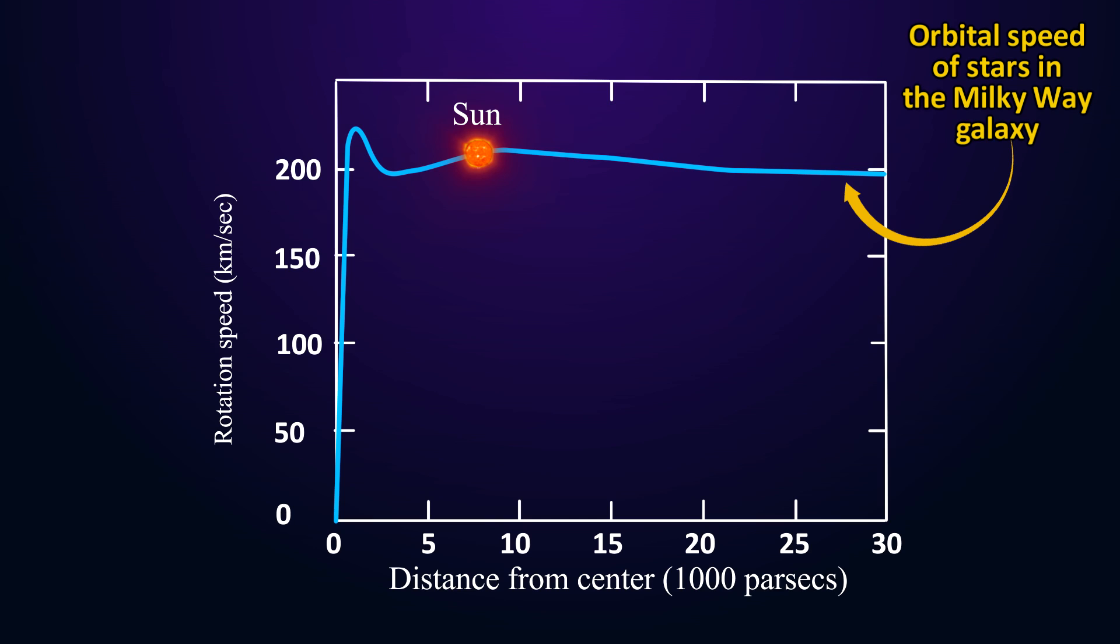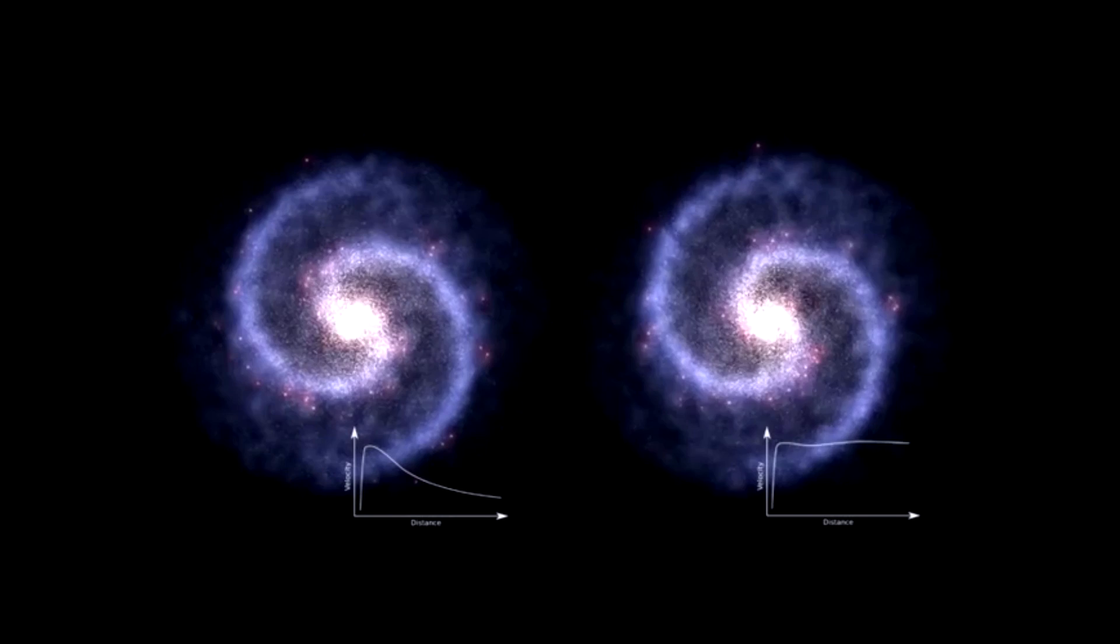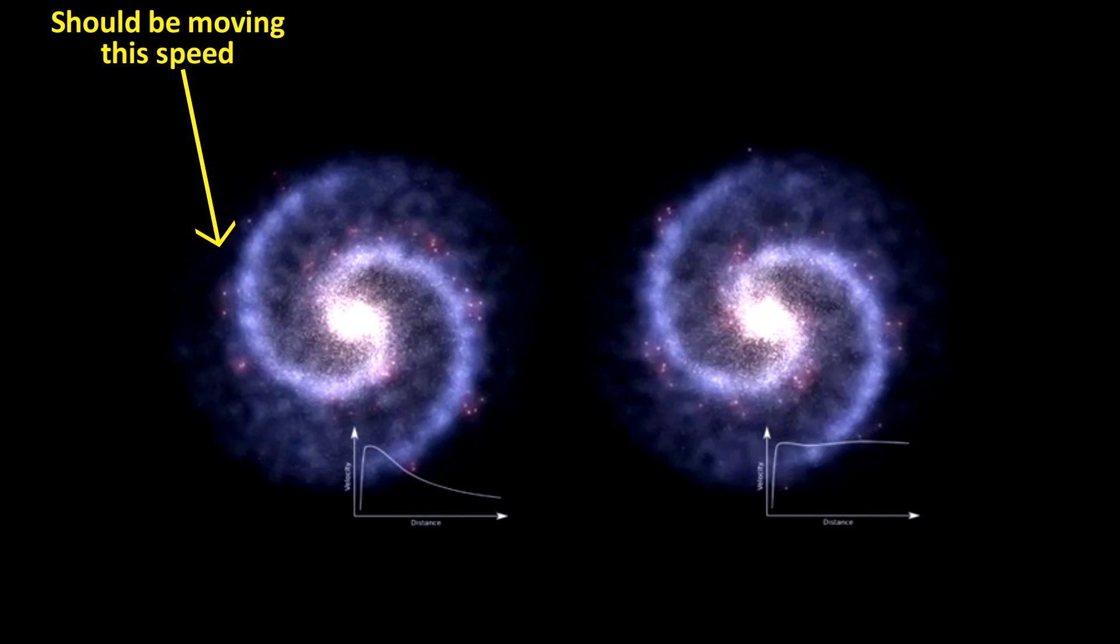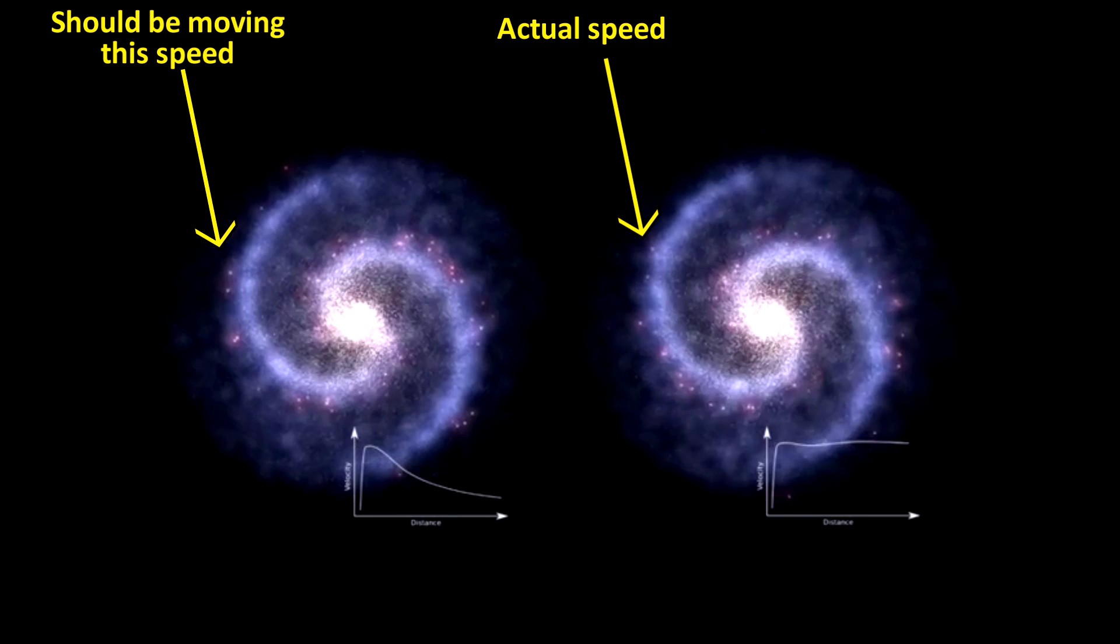But for some reason, this inverse square law does not appear to work based on the mass of all the visible matter in galaxies. The motion of stars in the Milky Way galaxy is about 200 kilometers per second, regardless of its distance from the center. You can see how this occurs on this computer simulation. The left shows how the galaxy should behave based on all the visible matter. The galaxy simulation on the right is how the galaxy actually behaves.